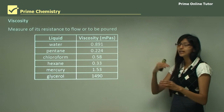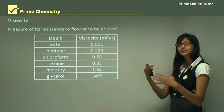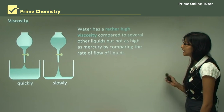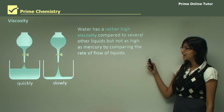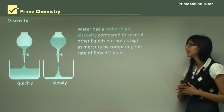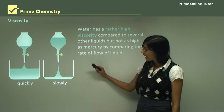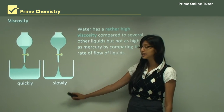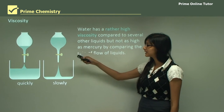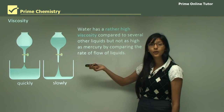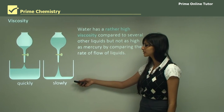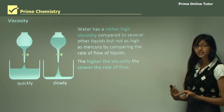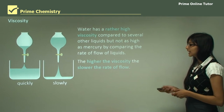If you try to pour glycerol, the flow rate will be much slower. Glycerol will not flow as freely as water because it is more viscous. Water has a rather high viscosity compared to several liquids, but not as high as mercury or glycerol. A less viscous liquid flows quite quickly compared to a more viscous liquid which flows really slowly. The higher the viscosity, the slower the rate of flow.